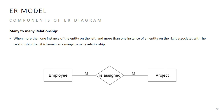Many-to-many relationship: many entities on one side are related to many entities on the other side. For example, many employees are assigned to many projects, and many projects have many employees assigned to them. That is a many-to-many relationship.